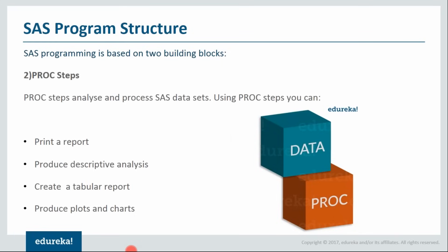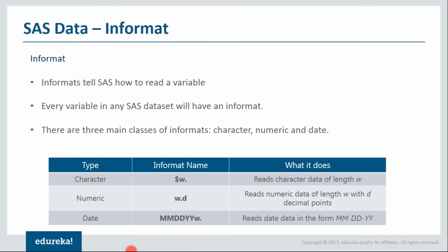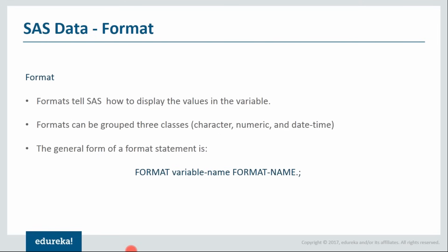Now let us take a look at SAS's data and data types. Data in SAS is dealt with in tabular form — your variables always occupy column space and observations take row space. For example, variables like name or ID lie in the column space, and their subsequent values depending on the records lie in the row space. SAS has two data types: numeric and character. The numeric data type will have all numbers, and everything other than that falls under characters. To handle data that is not classified under these two categories, SAS uses two concepts called informat and format. I will also talk about SAS dates, but I want to do it while doing the program so you understand it better.